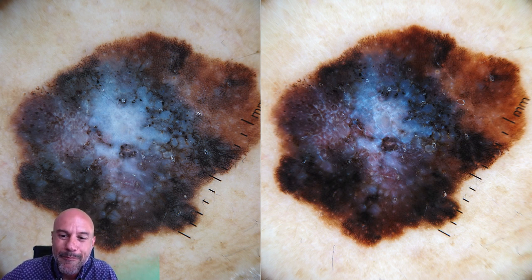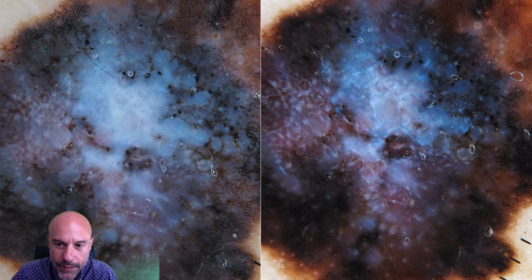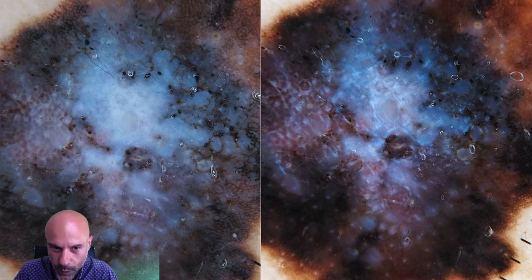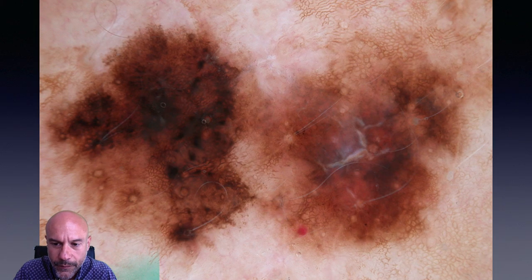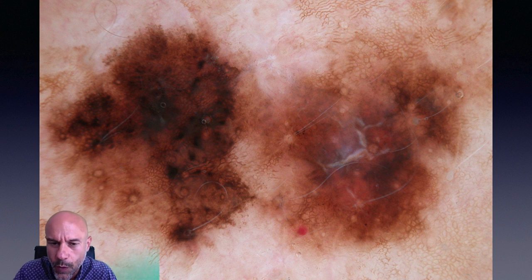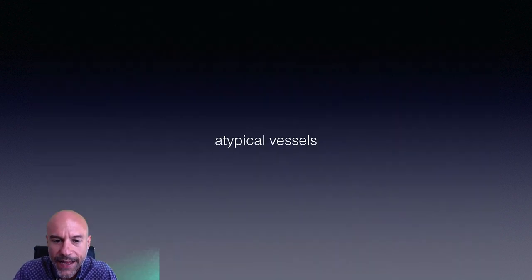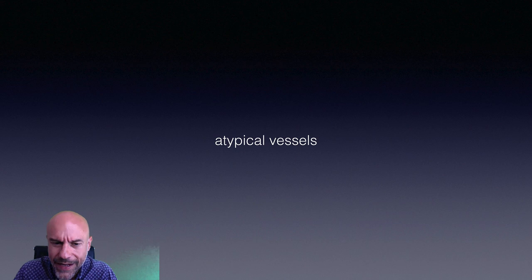Here again with magnification you can see the difference between polarized and non-polarized light for white shiny streaks, with one more example of these white shiny streaks.